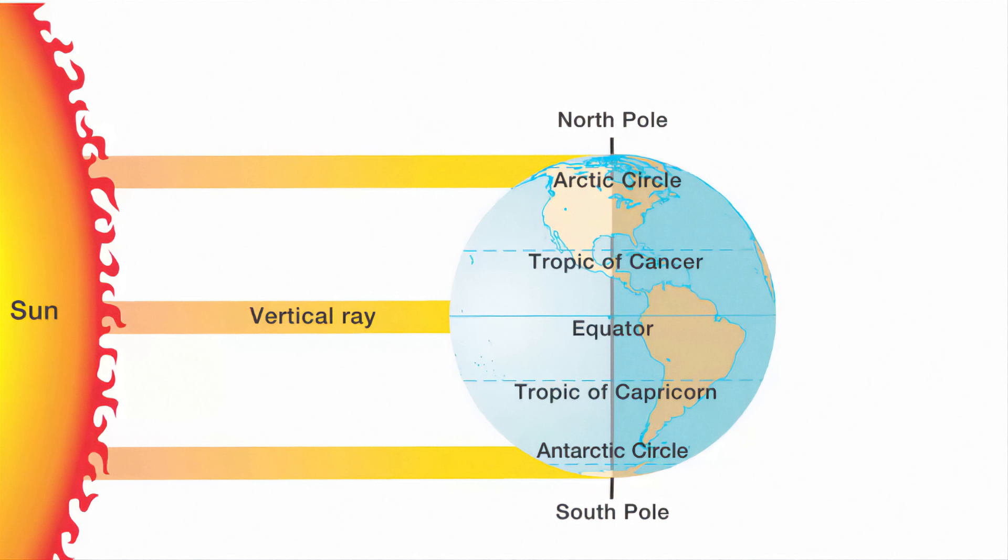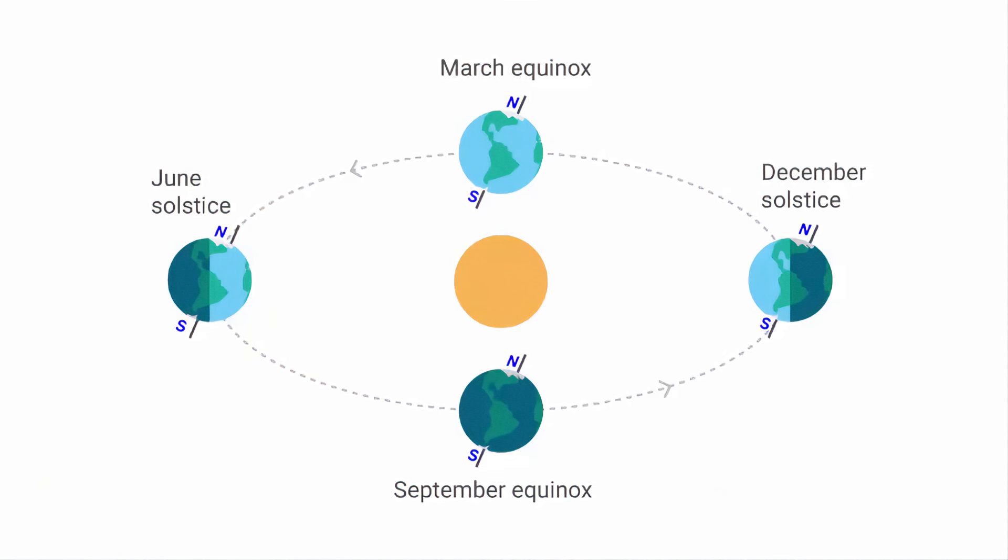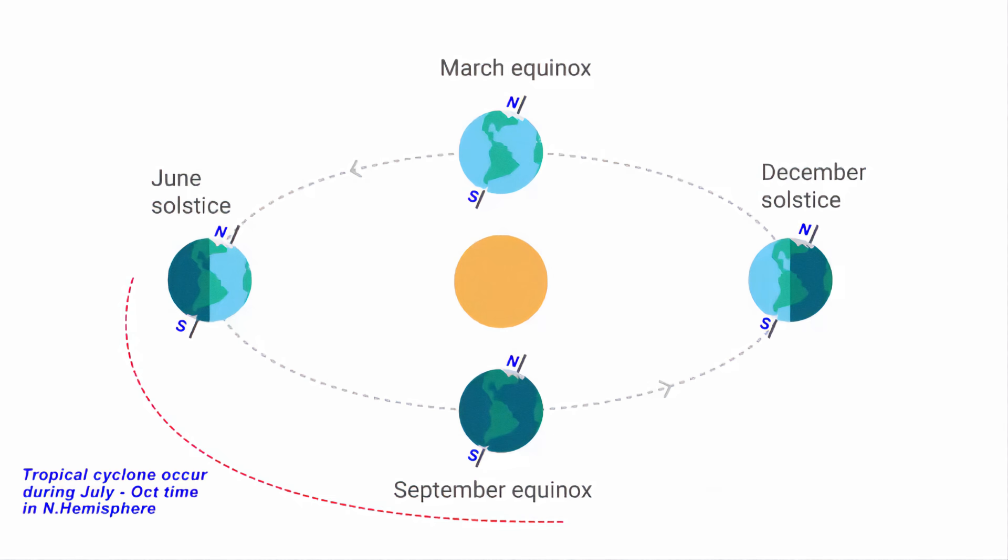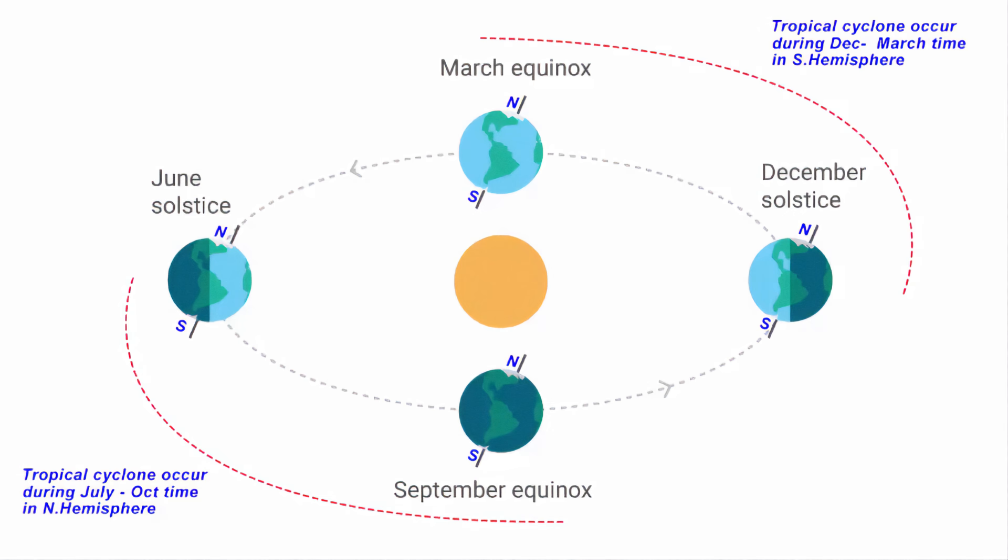Tropical cyclones occur at the time of maximum solar radiation, during the summer and autumn season — around July to October in the northern hemisphere, and December to March in the southern hemisphere.